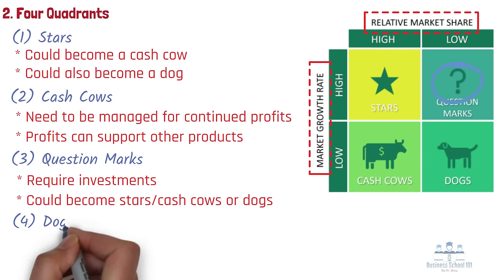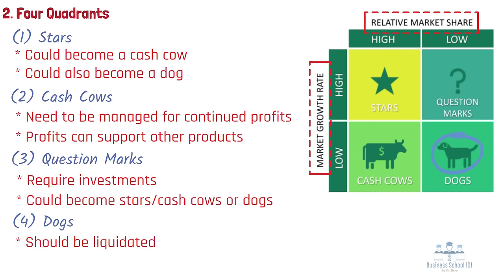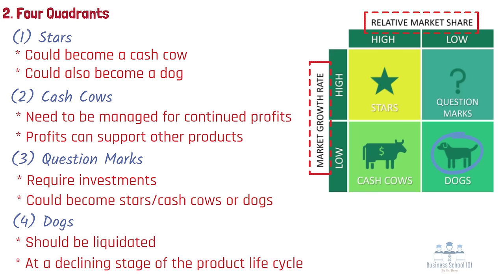Number 4: Dogs. Dogs are products with low market share and slow growth. Unless a dog has some other strategic aim, it should be liquidated if there are fewer prospects for it to gain market share. Normally, these products are situated at a declining stage of the product life cycle. The company should get rid of all non-value-added activities and features, then reposition the offering to generate positive cash flow or sell this business.